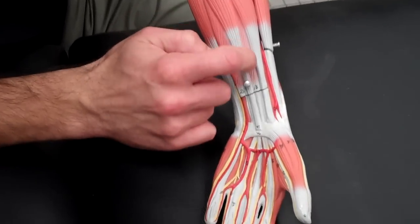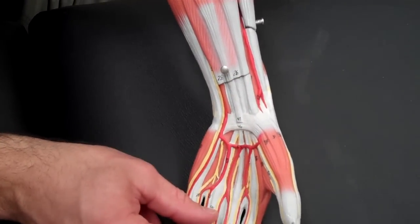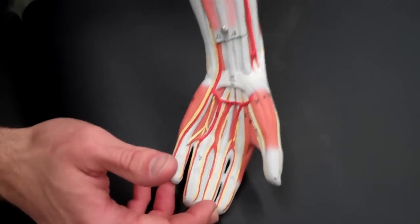And then superficialis here, both run down into your fingers. And that's all the muscles of the forearm.